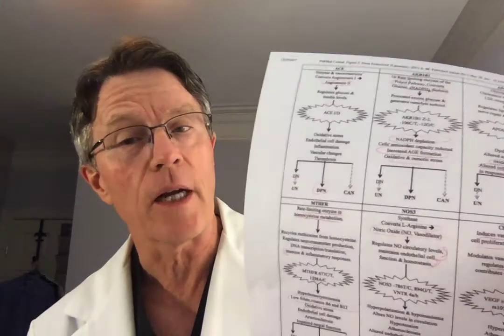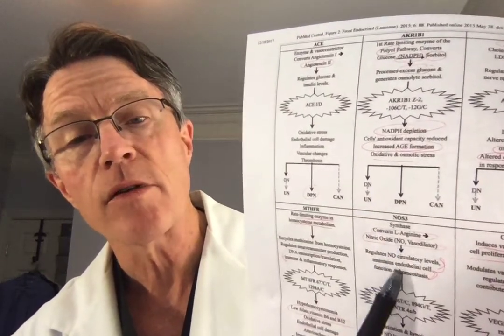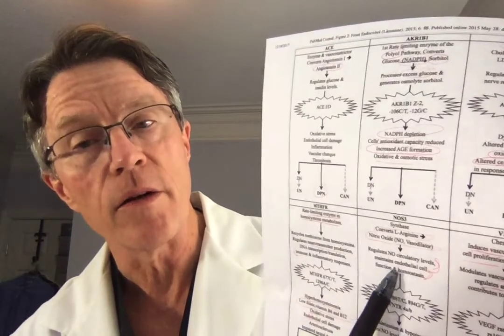NOS3 involves nitric oxide. Decreasing nitric oxide levels affects the nerves, the arteries, the micro arteries, the arterioles, and capillaries that support the nerve itself. As you can see, most of these genetic pathways involve those micro arteries that supply the nerves.